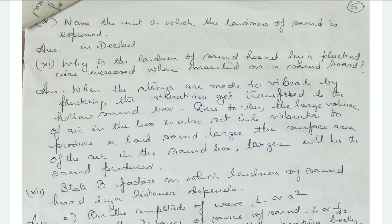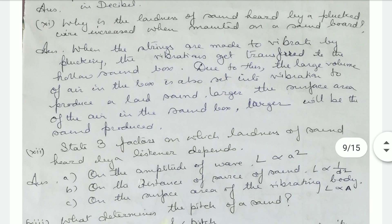When the strings present on the sound board are made to vibrate by plucking, the vibrations get transferred to the hollow sound box. Due to this, the large volume of air present in the box is also set into vibration, producing a loud sound. Larger is the surface area of the air in the sound box, larger will be the sound produced.